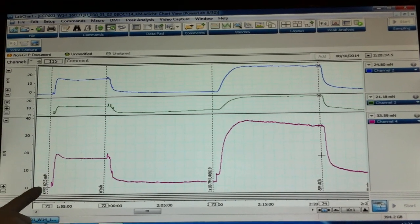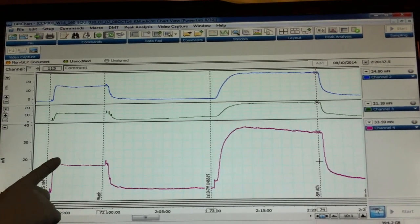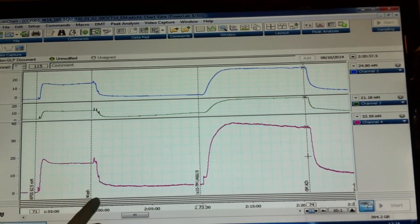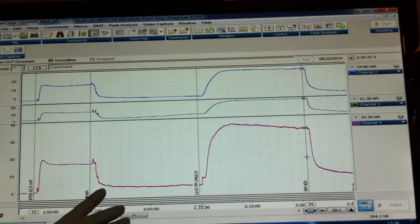High potassium physiological saline solution is added to cause a constriction. Once this response is plateaued, the tissues are rinsed using fresh physiological saline solution.